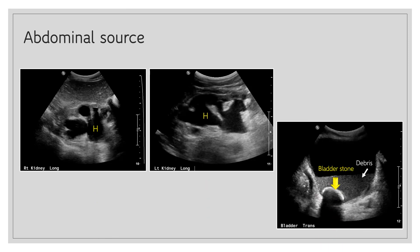In these images from a patient with septic shock, there is bilateral moderate to severe hydronephrosis. When scanning the bladder, a large stone is found followed by acoustic shadowing and surrounded by debris. This bladder was most likely acting as a nidus for infection and the likely cause of sepsis in this patient.